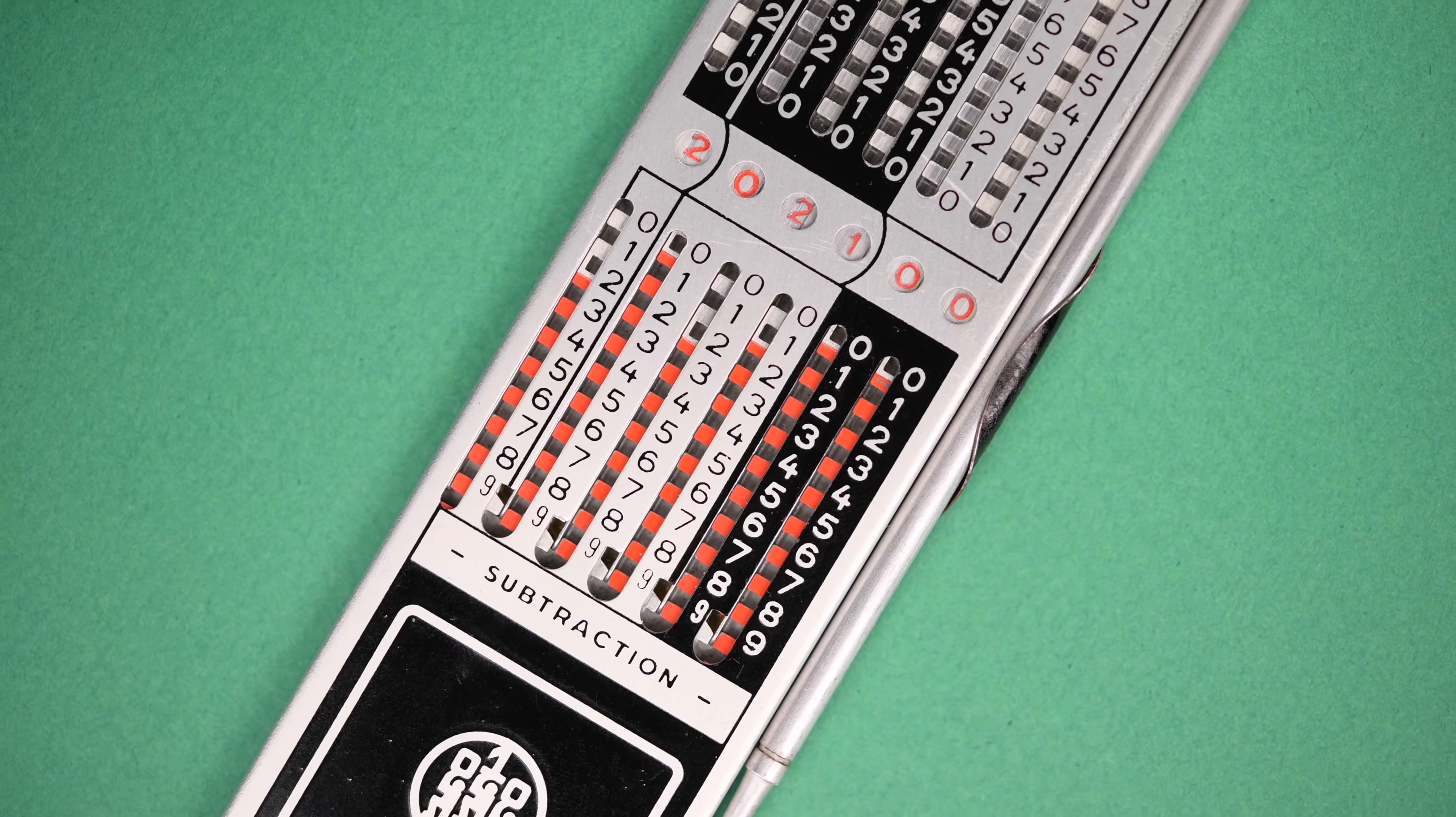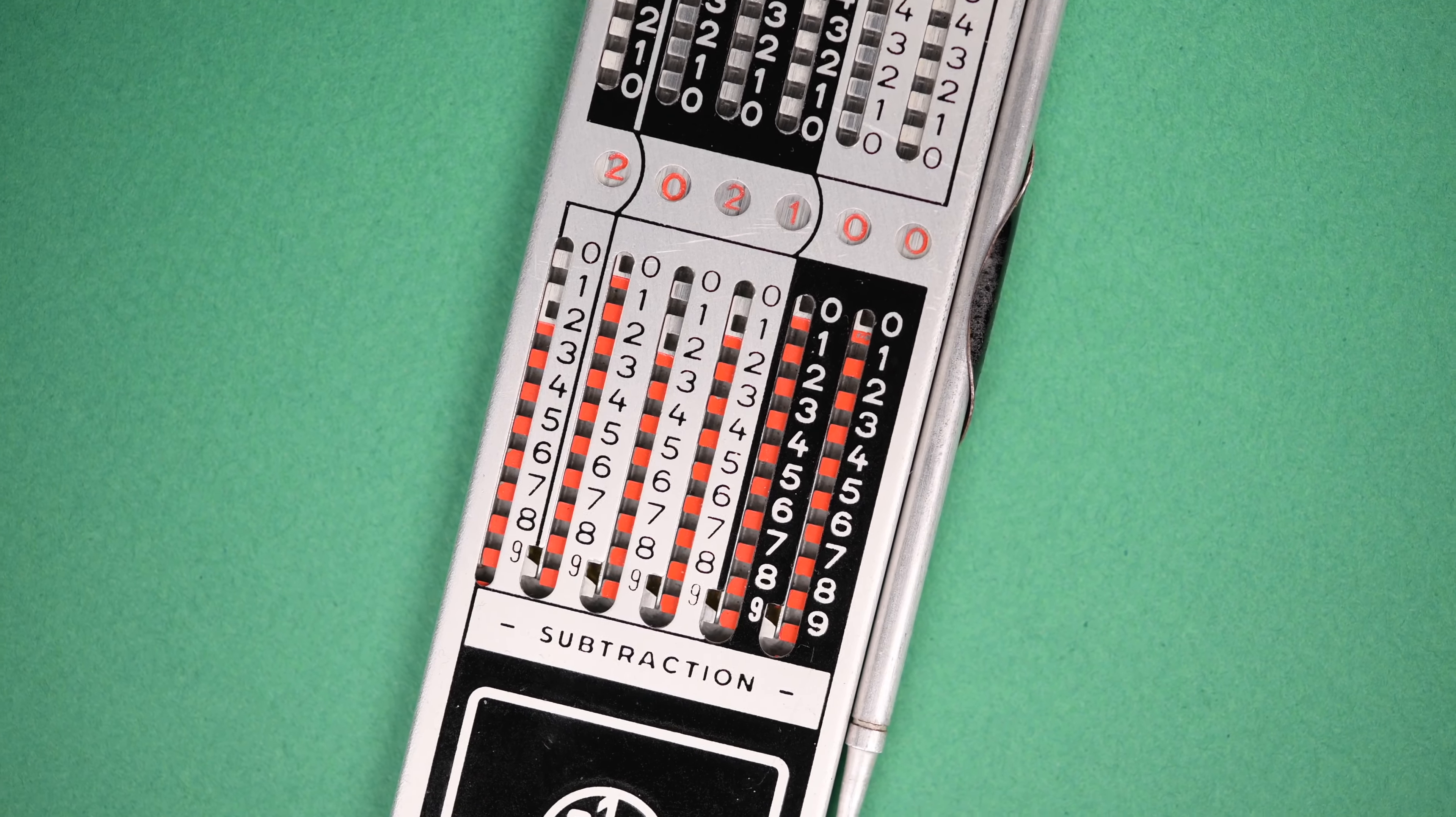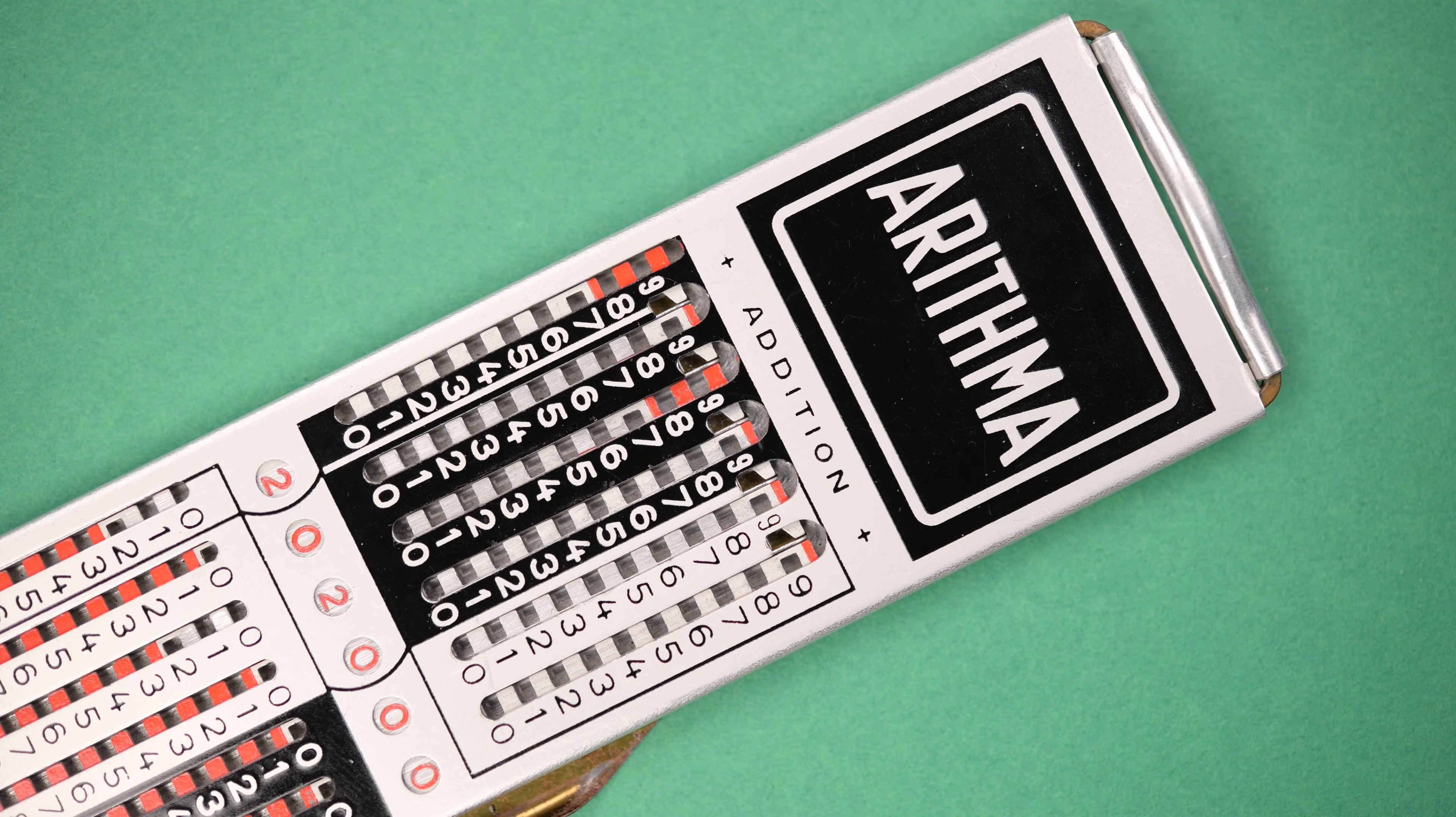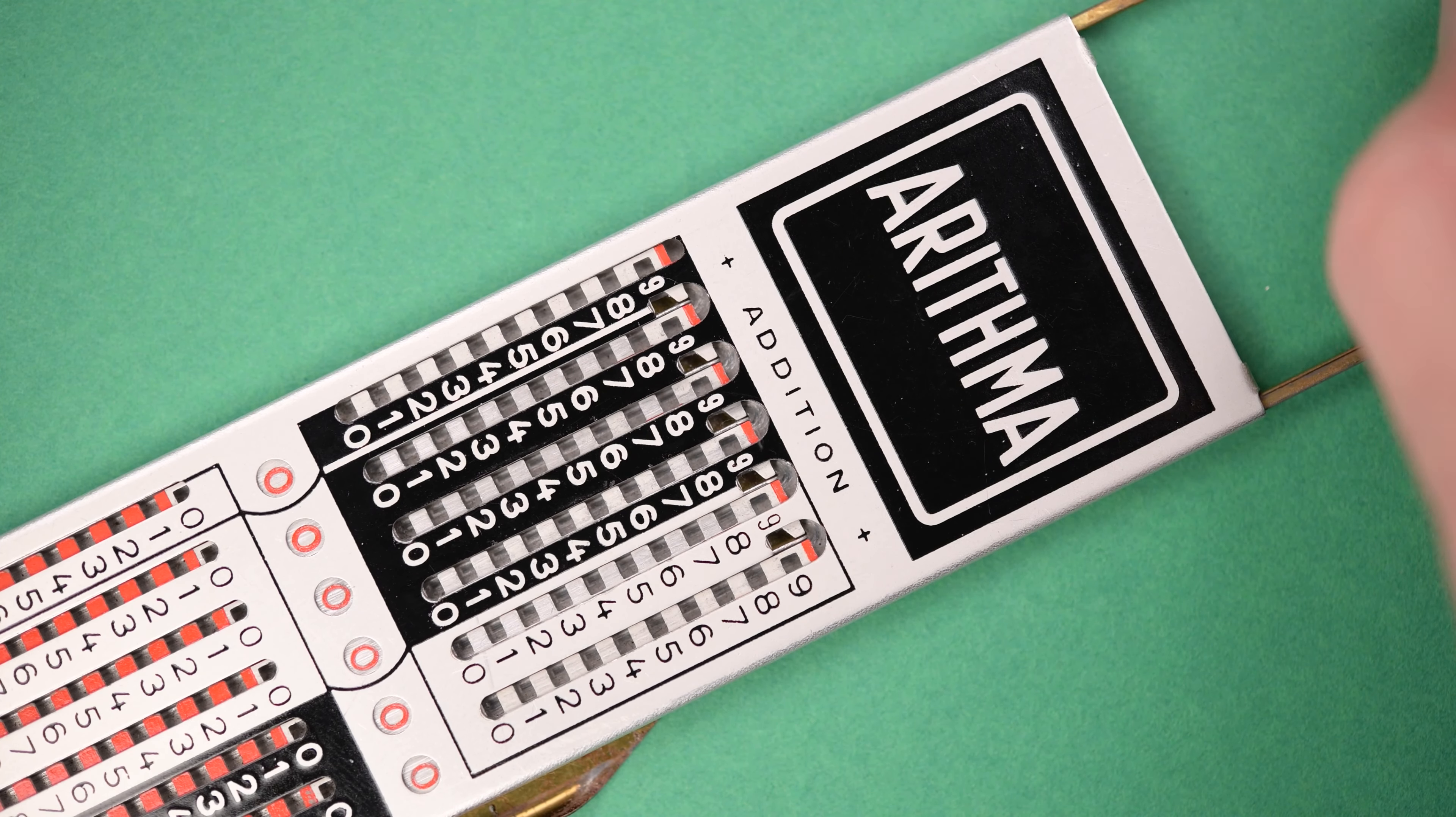You could also divide the different digits into 12 or 16 or whatever you wanted, to deal with non-decimal measurement systems or currencies like the old English shillings and crowns.